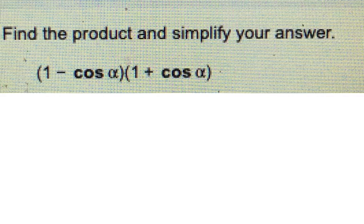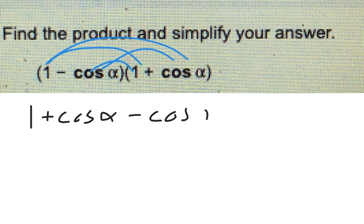This is one I saw you missed on your quiz. I think you did the right first steps. We need to distribute this. So that would be 1 plus cosine of alpha minus cosine of alpha minus cosine squared of alpha.